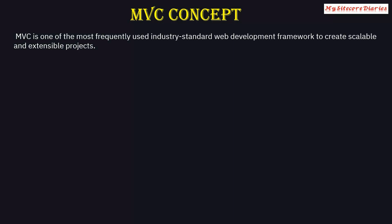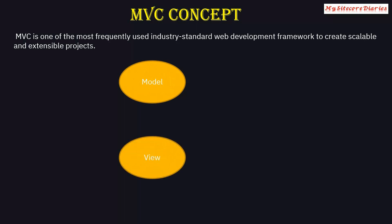So what is MVC? MVC is one of the most frequently used industry-standard web development frameworks to create scalable and extensible projects. It is not just a concept related to dotnet, but an overall web development framework which can be used to create scalable and extensible projects in any technology - Java also uses MVC. MVC stands for Model, View, and Controller.